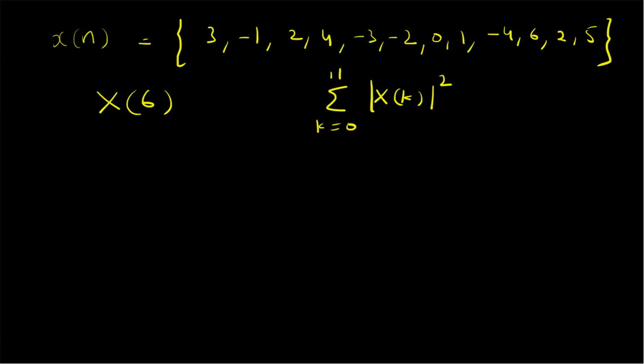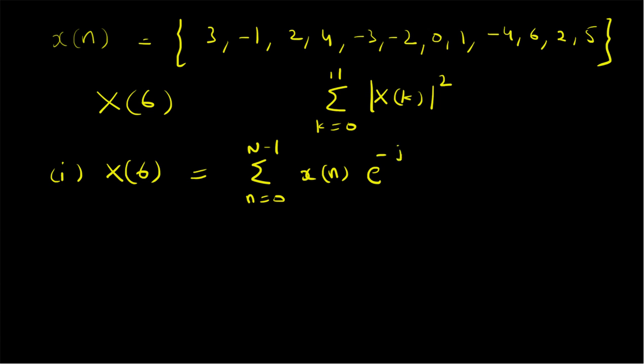We have to compute the energy in the frequency domain, or the term related to energy in the frequency domain. The main idea is that in order to compute these two values, we do not have to compute the whole DFT sequence X[k]. By definition, X[6] can be written using the DFT definition as a summation from n=0 to N-1 of x[n] · e^(-j2πnk/N), with k=6 and N=12.